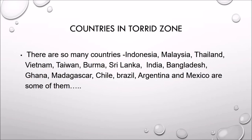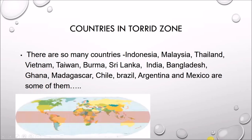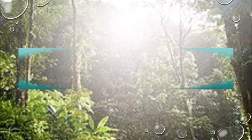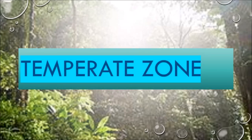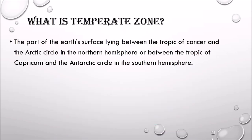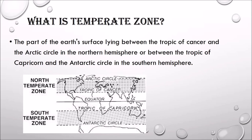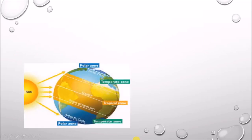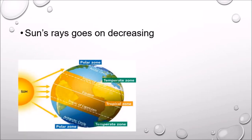There are many countries located in the torrid zone. Next is the temperate zone. The temperate zone is the part of the earth's surface lying between the Tropic of Cancer and the Arctic Circle in the northern hemisphere, and the Tropic of Capricorn and the Antarctic Circle in the southern hemisphere. In the temperate zone, the sun's rays go on decreasing and it has a moderate climate.